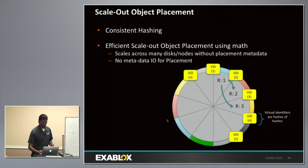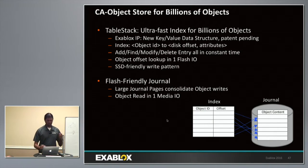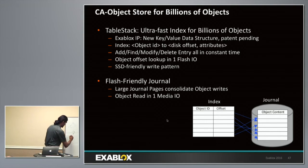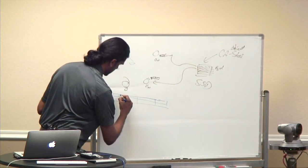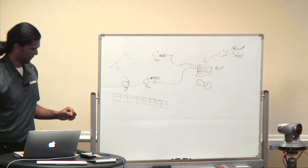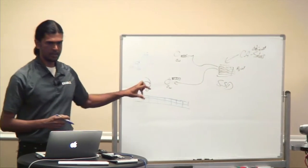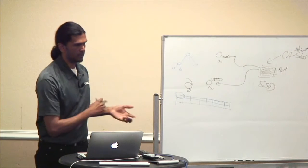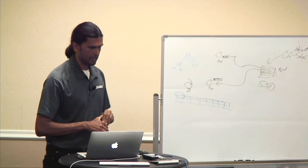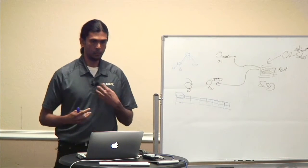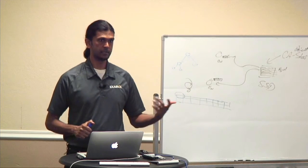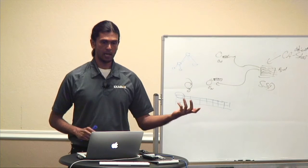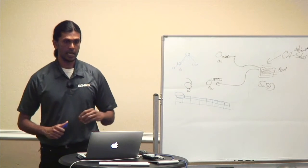Zooming into the content-addressable store in terms of the 5210 — in one 1U we have 10 drives in the front, and each has the content-addressable object store software running on its behalf. Each of those can hold billions of objects. We design for billions of objects because SSD sizes are growing geometrically, not linearly. When we have 8 terabyte or 16 terabyte SSDs, we want content-addressable object stores that can address all the objects within those SSDs.